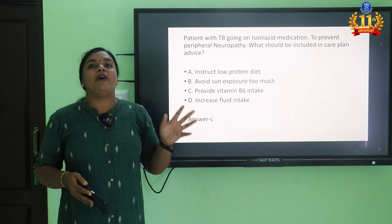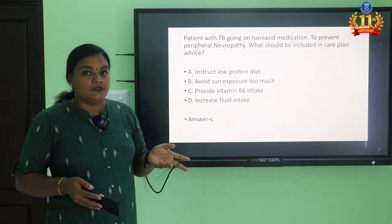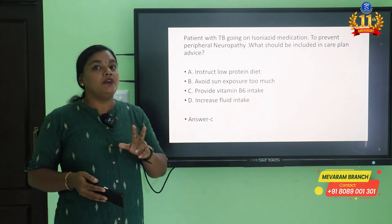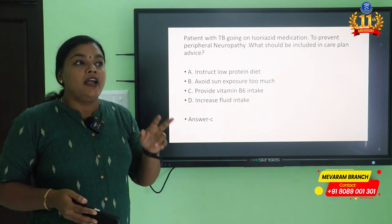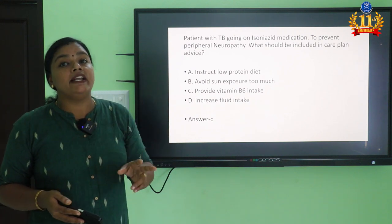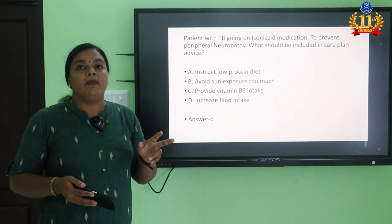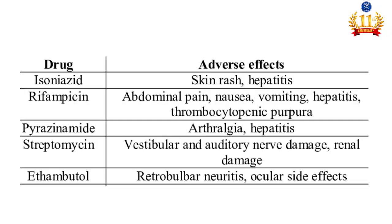We have five first-line drugs for TB. Isoniazid is one of the main drugs. Its important side effect is peripheral neuritis. We need to administer vitamin B6 — that is pyridoxine — continuously to the patient. Pyridoxine helps relieve this complication of peripheral neuritis. The answer is provide vitamin B6 intake.